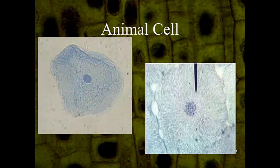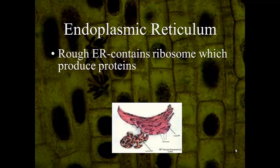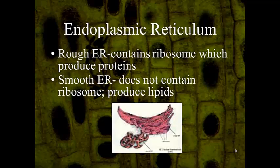The endoplasmic reticulum is the site that produces and packages proteins, sending them to different places. It contains ribosomes — my favorite organelle — which exist on the rough ER and also float freely throughout the cell. The ribosomes on the rough ER make proteins that are then packaged through the ER. There is also a smooth ER, which does not contain ribosomes — that's why it's smooth. It synthesizes and produces lipids, which are fats and waxes essential to the cell membrane.